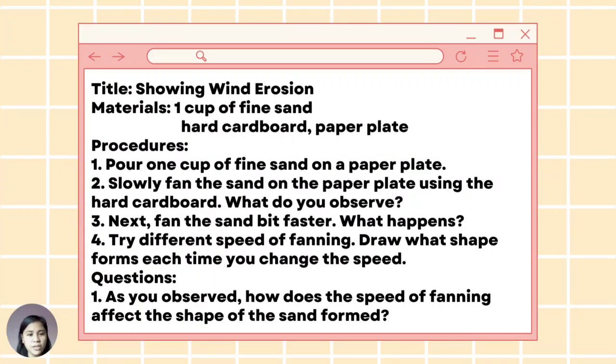For the second activity or experiment entitled Showing Wind Erosion, you need the following materials: one cup of fine sand, hard cardboard, and paper plate. Procedures: Pour one cup of fine sand on paper plate. Slowly fan the sand on the paper plate using the hard cardboard. Next, fan the sand a bit faster. What happens? And try different speeds of fanning. Draw what shape forms each time you change the speed. And answer the question: As you observe, how does the speed of fanning affect the shape of the sand form? And let us watch the video about that experiment or activity.